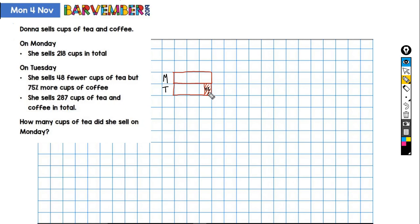These weren't sold on Tuesday. So 48 more on Monday. These didn't exist on Tuesday. I hope you've understood that. Right, so we've now got the tea, and now I want to do the coffee.